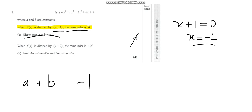Now moving on to part (b): when f(x) is divided by x minus 2 the remainder is minus 23. Find the values of a and b. This is 4 marks — double the marks of part (a). First, we plug in x equals 2, as the divisor x minus 2 gives x equals 2, and the remainder is minus 23.